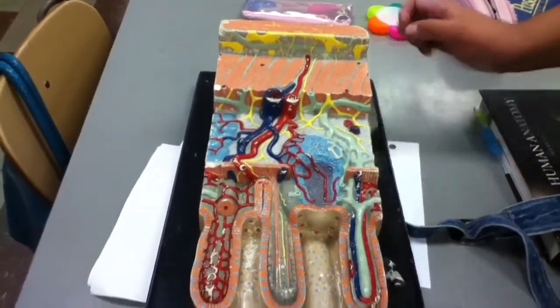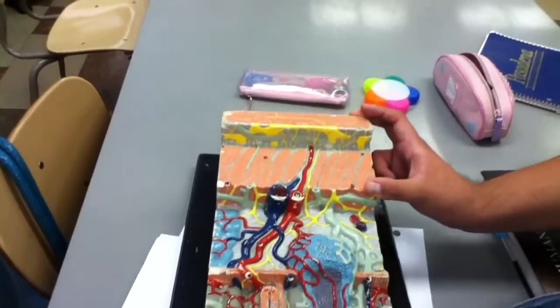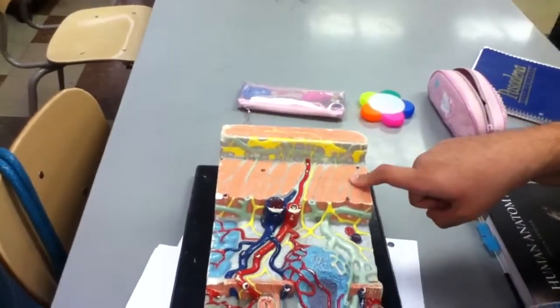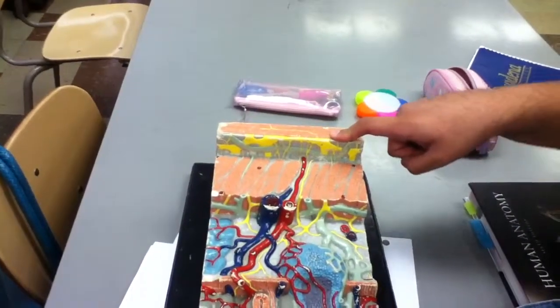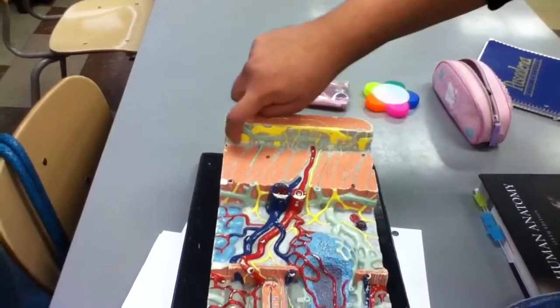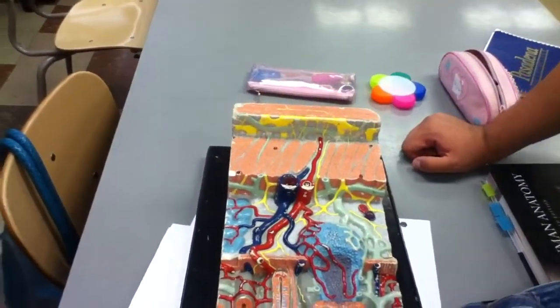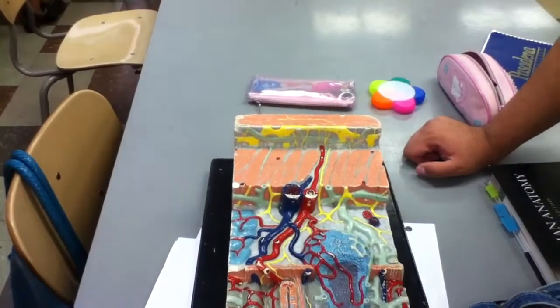Then we're going to go into the muscularis layer. In the muscularis layer, we're going to have inner circular smooth muscle and outer longitudinal smooth muscle. We're going to have another nerve plexus. This is called the myenteric nerve plexus or Auerbach nerve plexus.